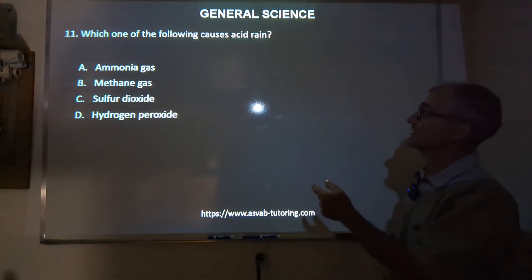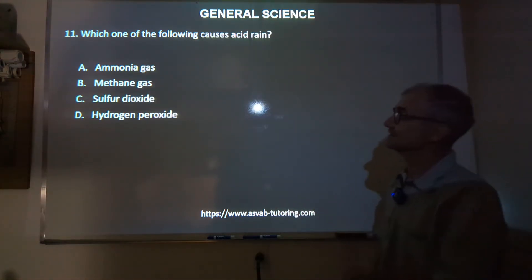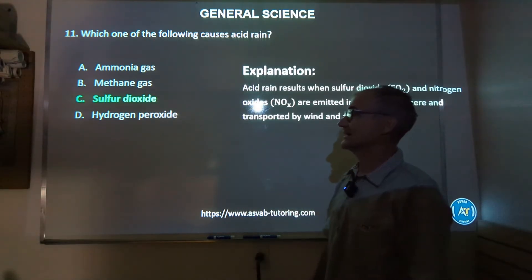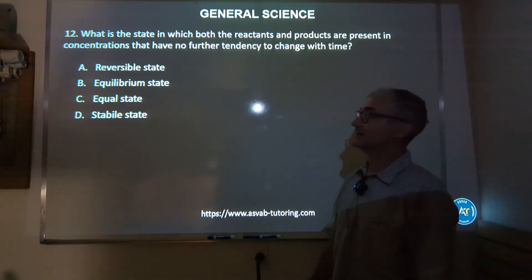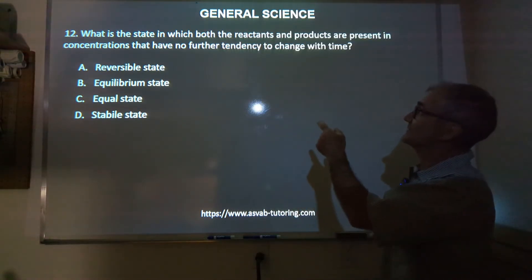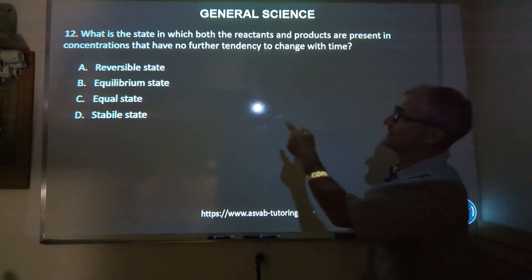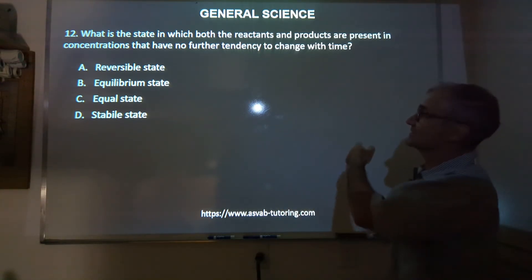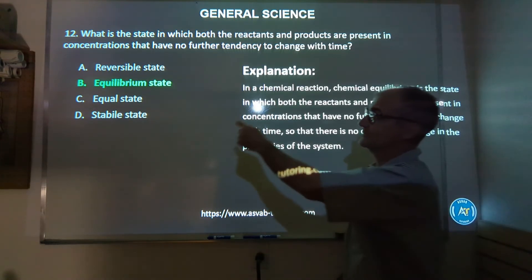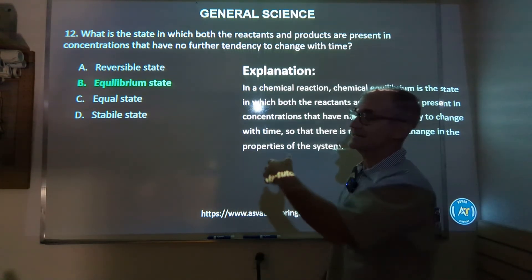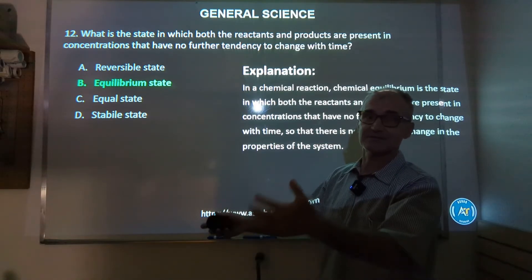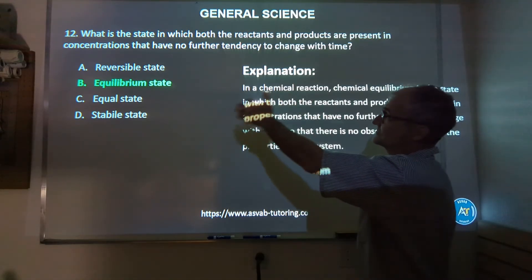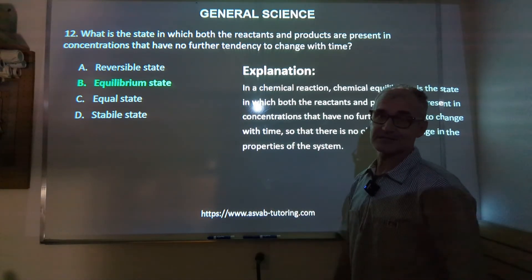Number 11: which of the following causes acid rain? Correct answer C, sulfur dioxide. Number 12: what is the state in which both the reactants and products are present in concentrations that have no further tendency to change with time? Correct answer B, equilibrium state. That makes sense — equal means balanced, and that's what we're looking for: no further change, a balanced state or equilibrium.